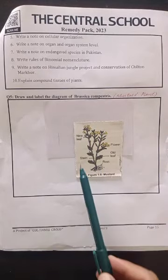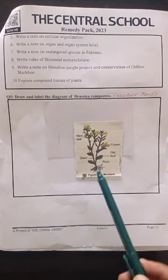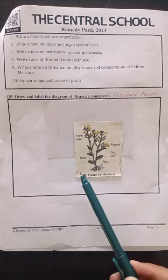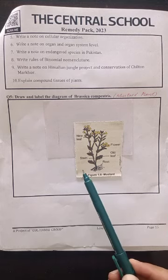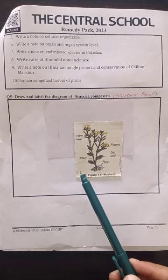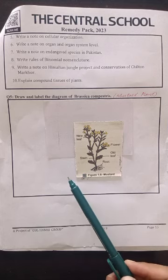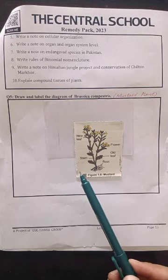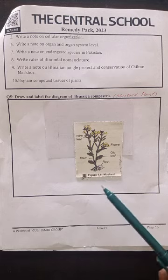We know that Brassica compressors is the scientific name of the mustard plant. On page number 12 of your biology book in unit 1, you can see the topic of mustard plant. Mustard plant is given as an example of multicellular organization.